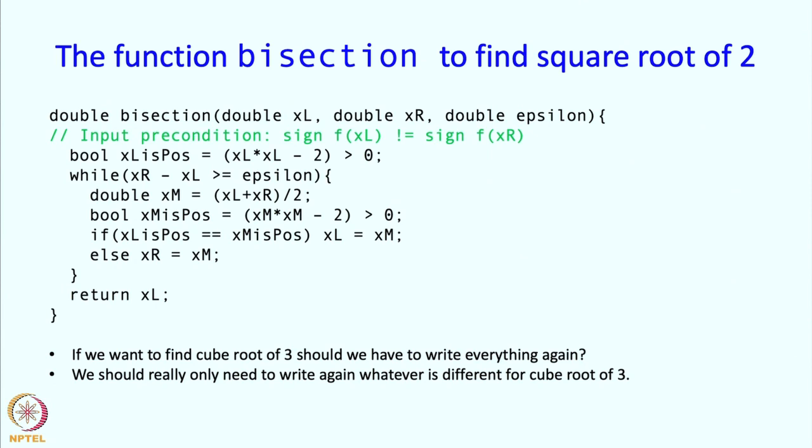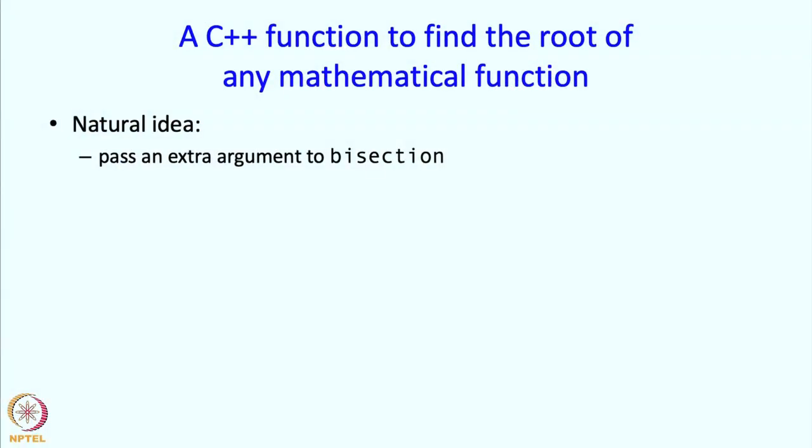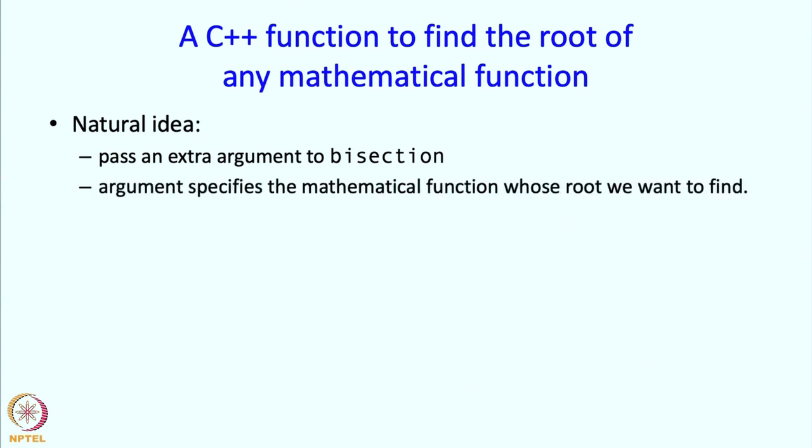We could change the text, but is there a better way? The general question is: can we write a bisection function that finds the root of any mathematical function whatsoever, provided the requirements of bisection are satisfied — namely that we supply xl and xr such that the signs of the function are not identical at those two points? We would like a single function usable to find the root of any mathematical function. A natural idea is to pass the mathematical function whose root we want to find as an extra argument to bisection.